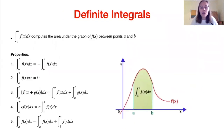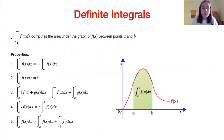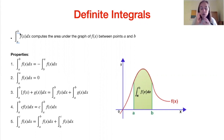Moving on then to definite integrals. We said before that indefinite integrals are where we do not specify integration boundaries. Definite integrals, as the name gives away, are where we do know between which boundaries we are integrating. Those boundaries are denoted by a lower boundary at the bottom of the integral and an upper boundary at the top. So a definite integral computes the area of a graph f of x between points a and b — that is conceptually what a definite integral is.